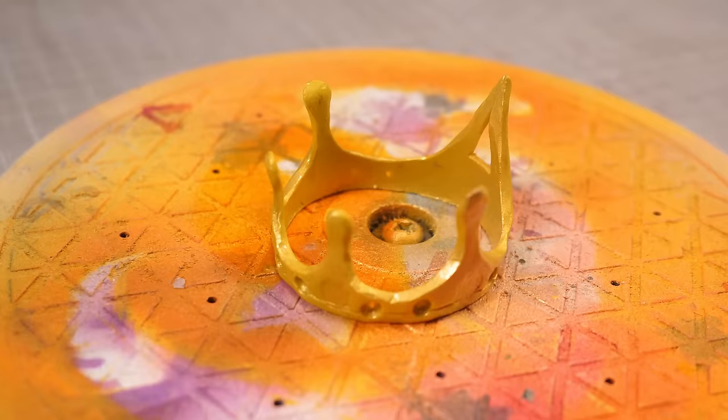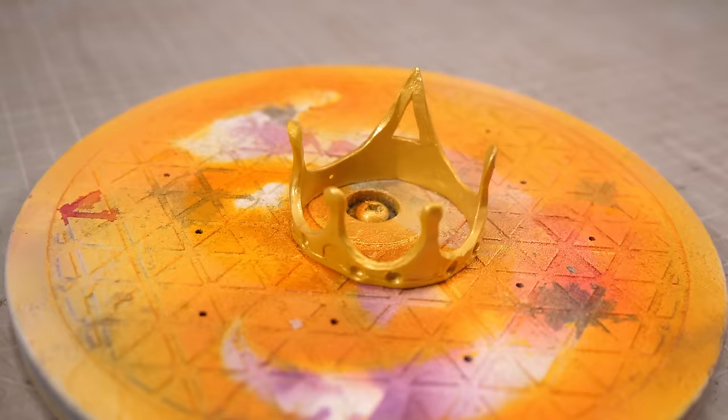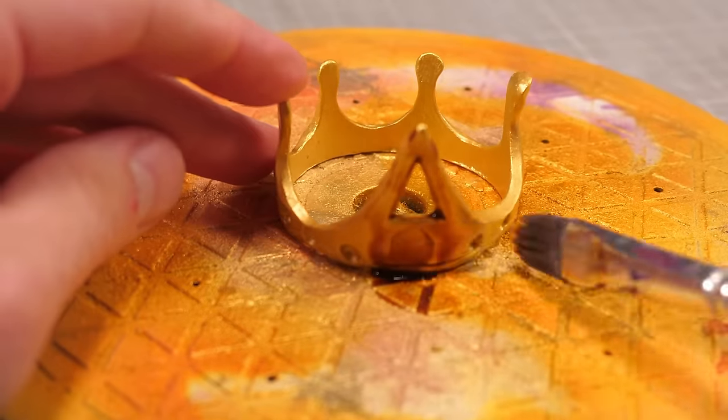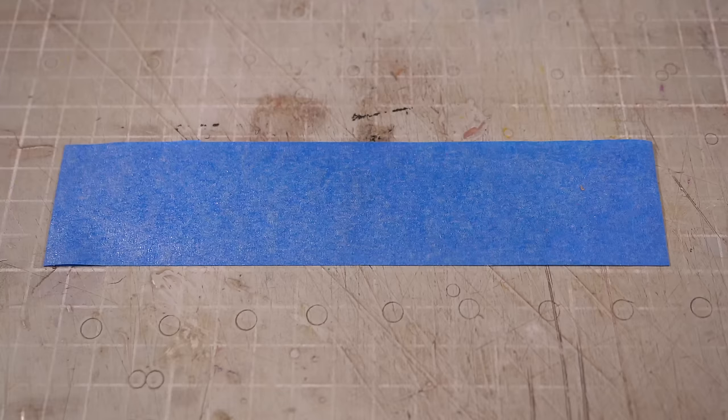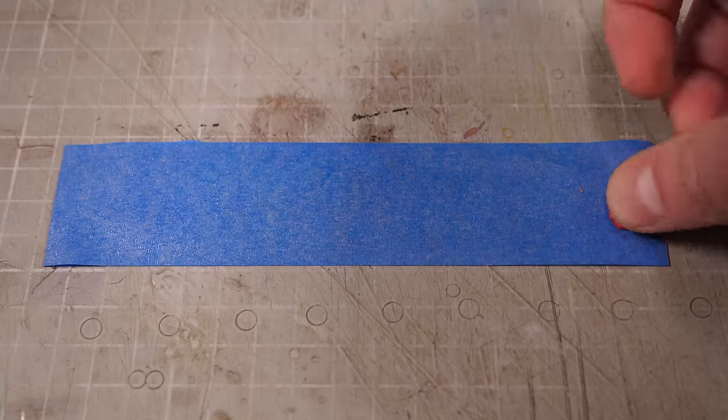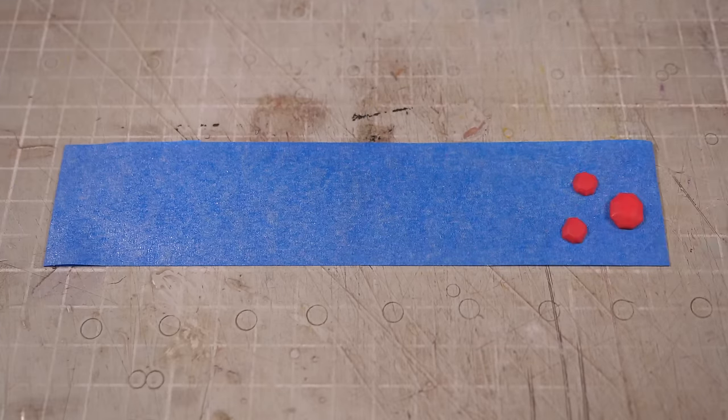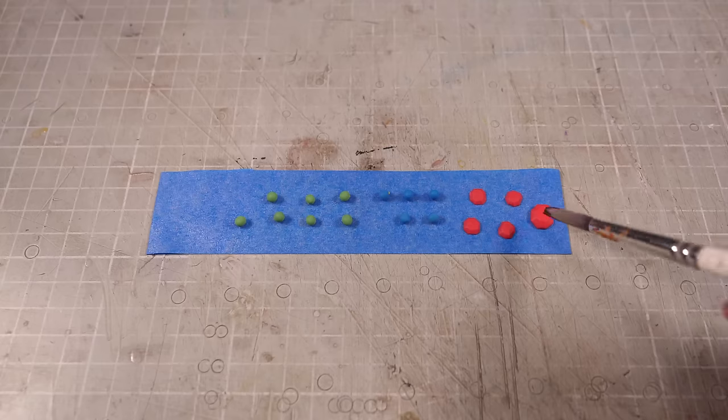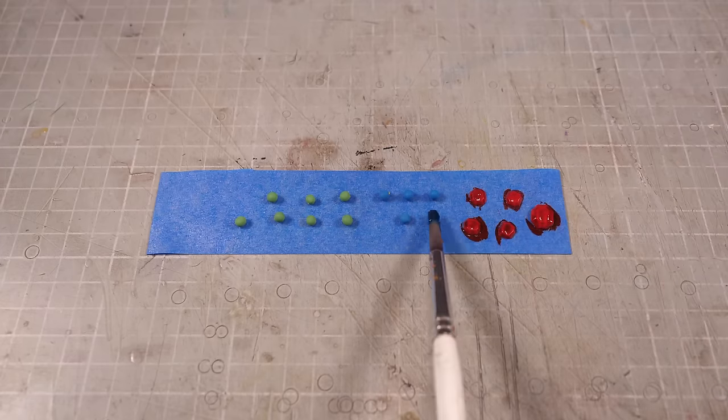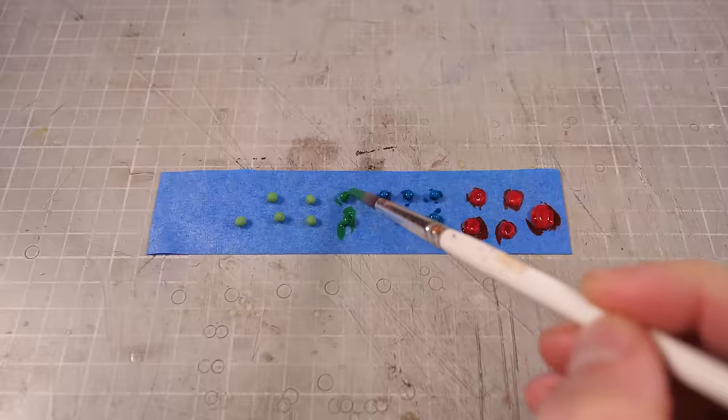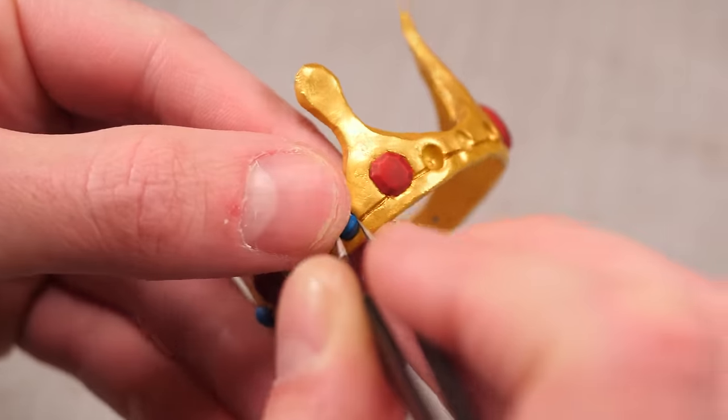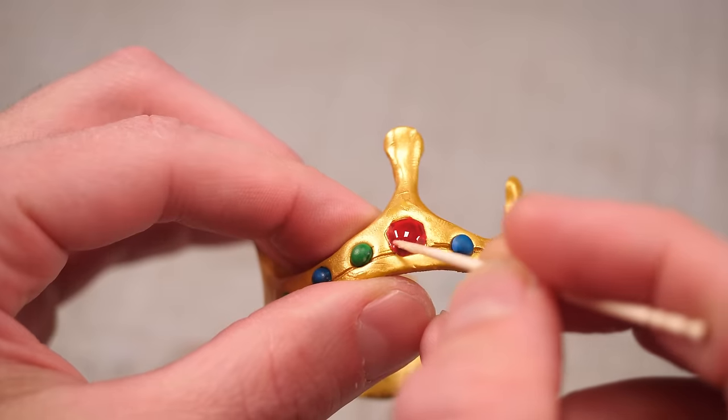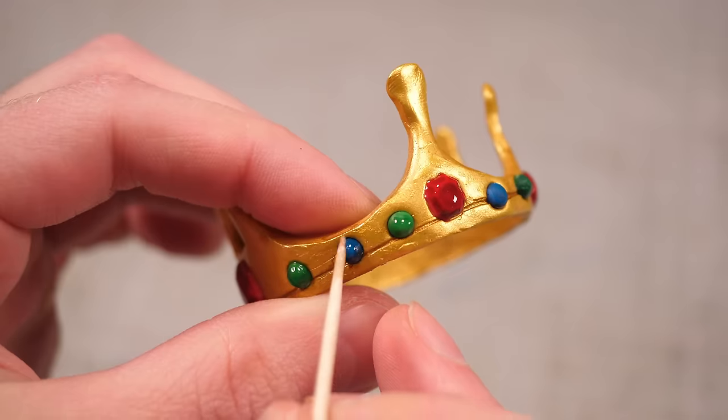With the gems removed I can give the entire crown a shiny gold top coat followed by a watery brown wash to add some shading. While the crown's drying I'll take my gems and line them up on the sticky side of some painter's tape then give each of them a color appropriate glazing so they're a bit more gemmy looking before gluing them back in place on the crown. Finally for some final shiny shine I'll give each of the gems a coat of UV resin.